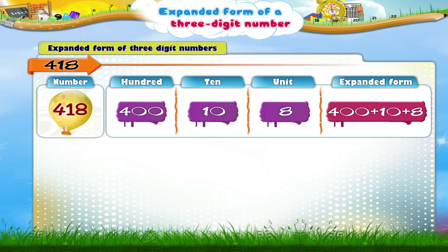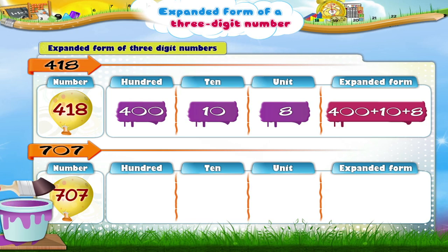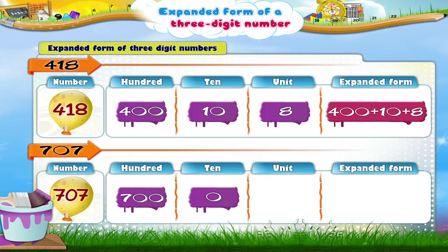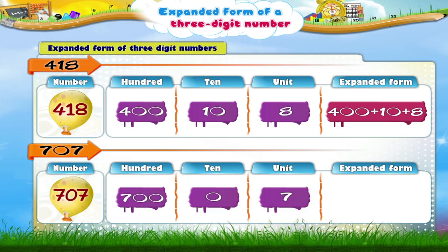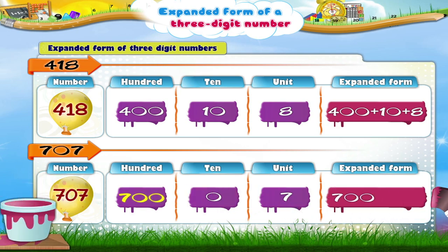Let us take another number: seven hundred and seven. Seven is in the hundreds place, so its place value is seven hundred. Seven hundred and seven is 700 plus 0 plus 7.